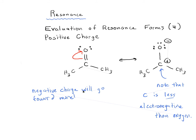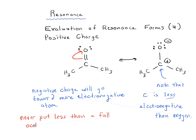The positive charge is left behind on the less electronegative atom. This is really just a long way of saying: never put less than a full octet on nitrogen or oxygen, unless you're talking about nitrenes, carbenes, or oxenes — very rare cases not usually encountered in this course. If you're going to have an atom with less than a full octet, preferably put it on carbon instead of oxygen. It just makes sense from an electronegativity standpoint — you don't want less than a full octet on a more electronegative atom.